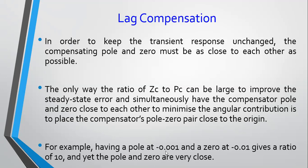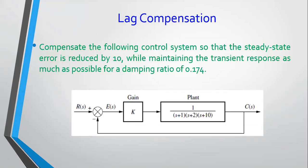For example, having a pole at minus 0.001 and a zero at minus 0.01 — so basically your lag compensator would be (S + 0.01) in the numerator over (S + 0.001). In a way, this gives a ratio of 10, so you expect your static error constant to increase by 10, and yet your pole and zero are very close together. If you consider vectors linking these two points to your operating point, their lengths should be more or less the same. So let's take an example to illustrate the design of a lag compensator.